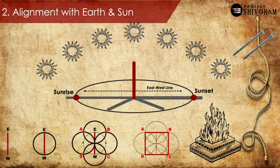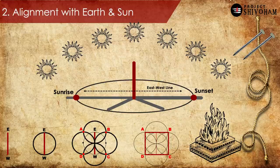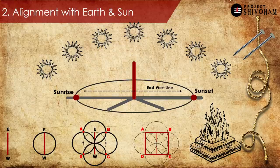Moving to the second most important thing about Sulbhasutras: alignment with the cardinal directions of the earth and the sun. We all know that the solstices and equinoxes significantly impact the direction in which the sun rises and sets from any given fixed location on earth. You might also have visited certain specific temples in Bharat where the sun enters into the garbha griha on specific days of the year. Sulbhasutras explain how to track the sun's position and pin down the cardinal directions.